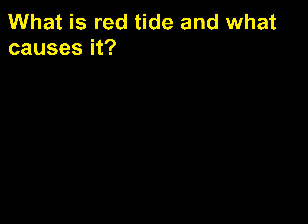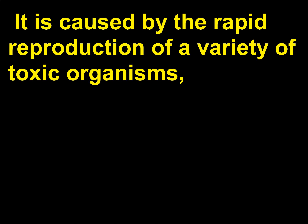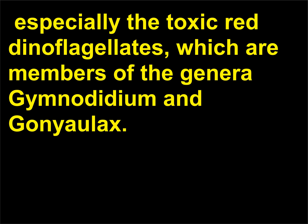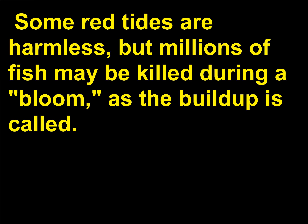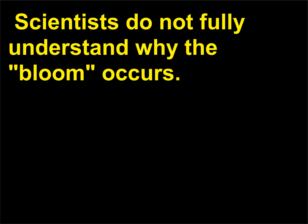What is red tide and what causes it? Red tide is a term used for a brownish or reddish discoloration occurring in ocean, river, or lake water. It is caused by the rapid reproduction of a variety of toxic organisms, especially the toxic red dinoflagellates, which are members of the genera Gymnodinium and Gonyaulax. Some red tides are harmless, but millions of fish may be killed during a bloom. Other red tides can poison shellfish and the birds or humans who eat the contaminated food. Scientists do not fully understand why the bloom occurs.